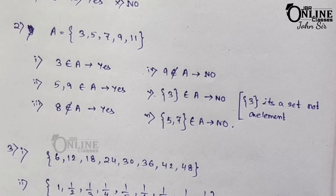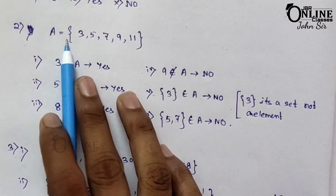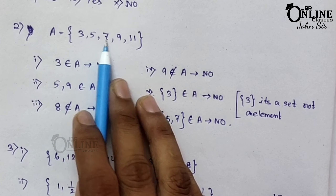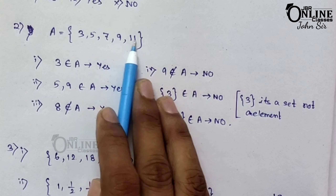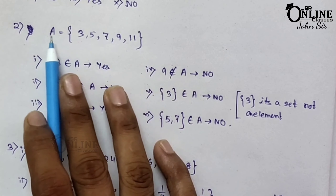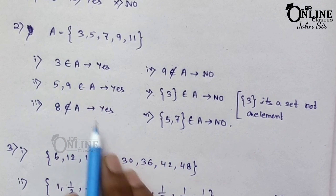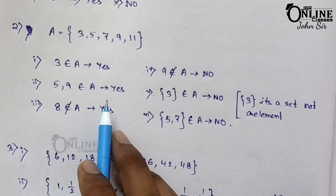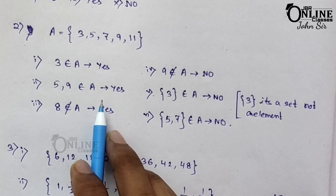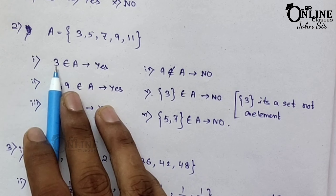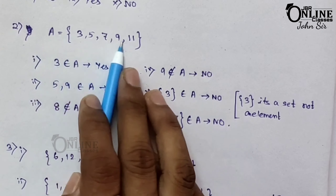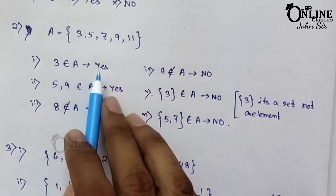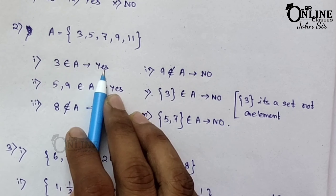Now sum number 2. If A equals {3, 5, 7, 9, 11}, these are the elements of set A. Write which of the following statements are true. First: 3 is an element of A. That means 3 is an element of set A — yes, it's a true statement.